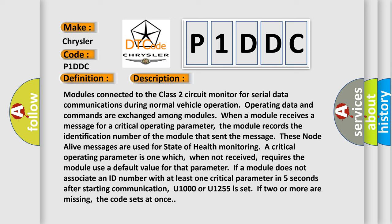A critical operating parameter is one which, when not received, requires the module use a default value for that parameter. If a module does not associate an ID number with at least one critical parameter in five seconds after starting communication, U1000 or U1255 is set. If two or more are missing, the code sets at once.